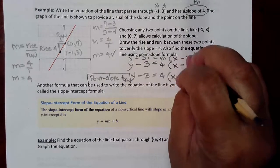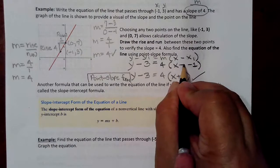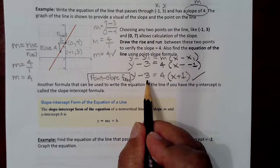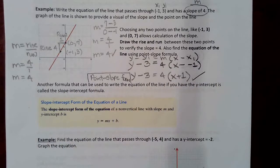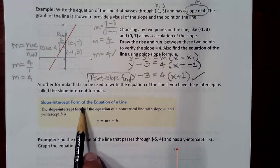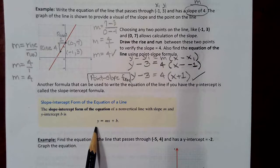And we ended up getting, let's clean this up a little bit, y minus 3 is equal to 4 times x plus 1. And you can leave it like that if they're okay with what's called point-slope form. If they want you to get it in this form, this is called slope-intercept form. And you can see what's different about it is that the y is isolated.